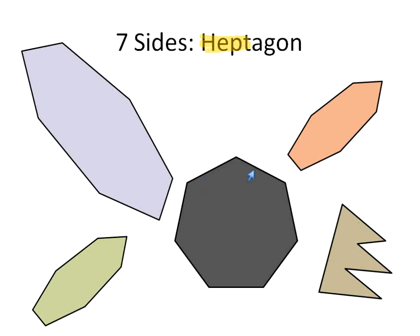These ones, one, two, three, four, five, six, and seven. Again, any seven sided polygon is going to be called a heptagon.